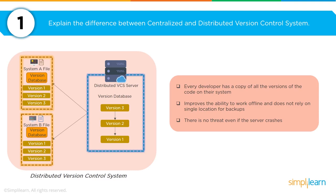In a distributed model, you check out all of the code directly onto your local development machine, so you can have a copy of the entire solution running locally. This allows you to work effectively offline and enables scalability when building out your team — whether in Europe, Asia, North or South America. And if the main server crashes, it's not a big deal because each person has a copy of the code. Once the server comes back up, everyone checks back in as if nothing happened.